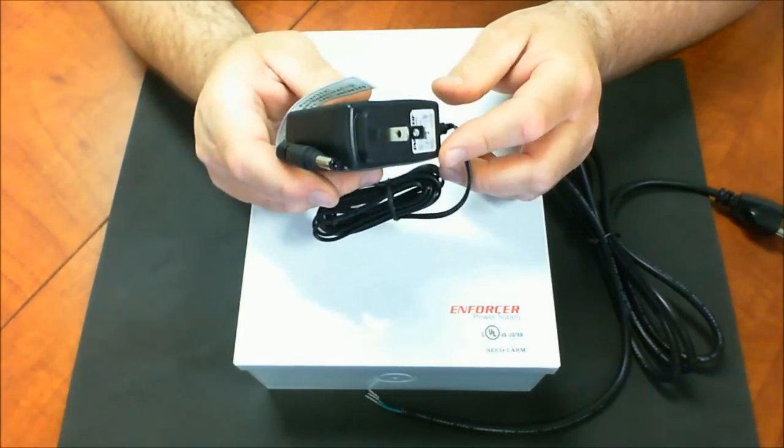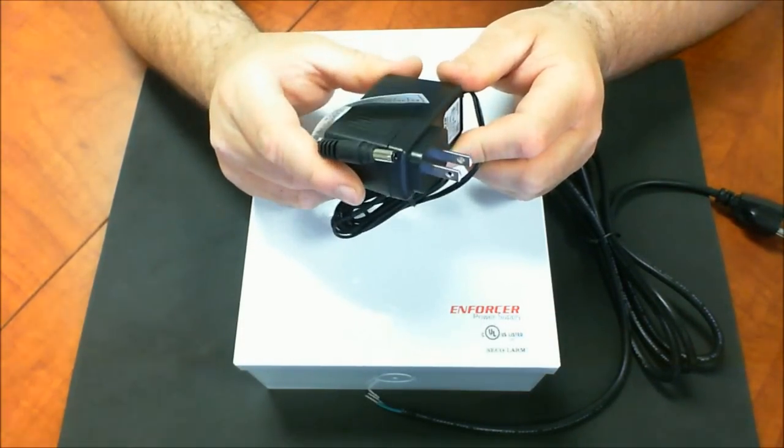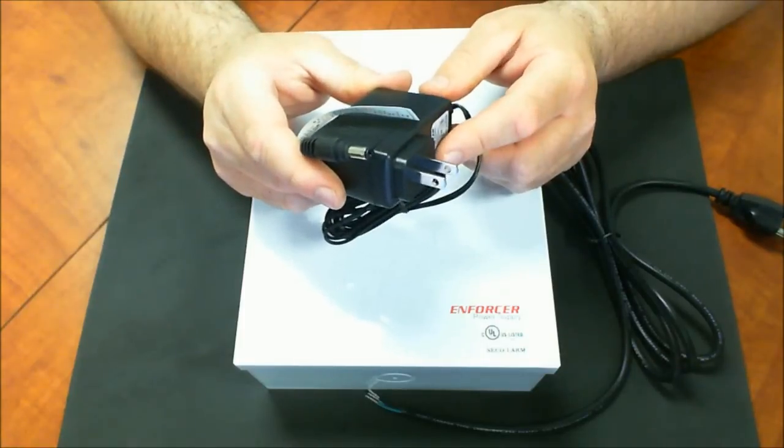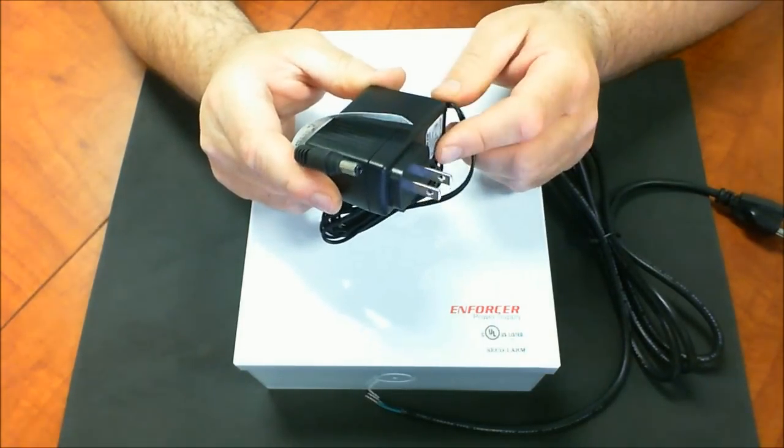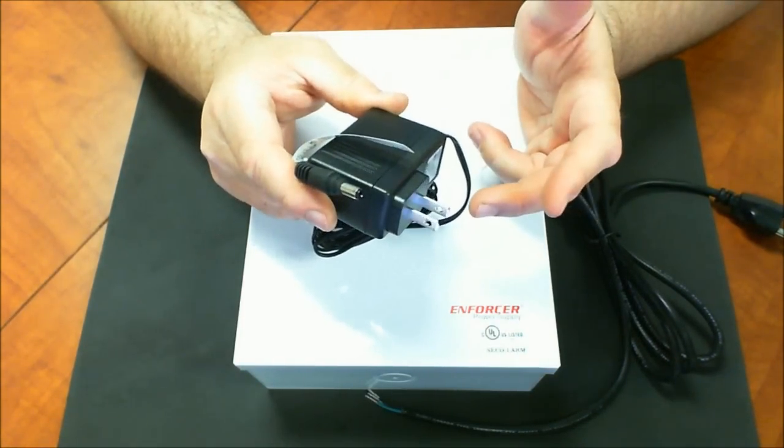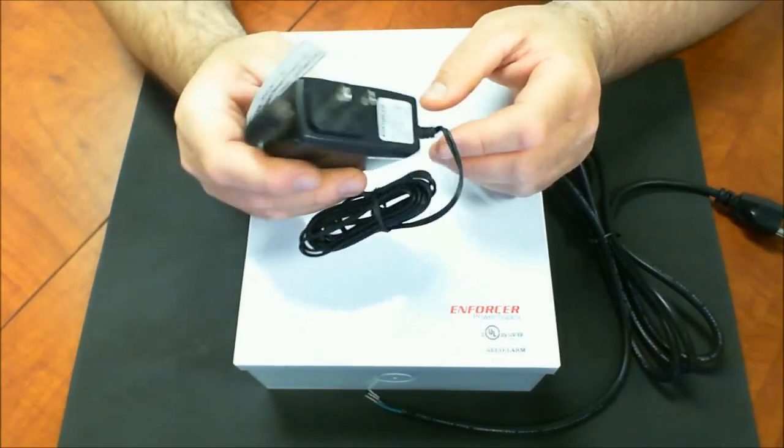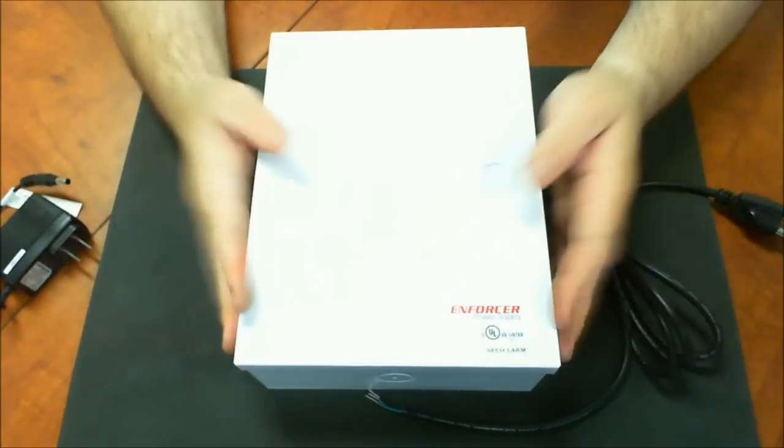The end result, if you have multiple cameras, now you have a power strip laying somewhere that's powering all your cameras. Somebody can unplug it, somebody can step on it and turn it off. You never know what's going to happen. Now your surveillance system is down and it's not doing what it's supposed to do. So I usually always recommend using a central power supply.